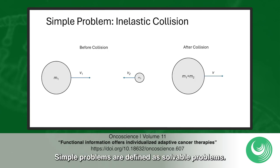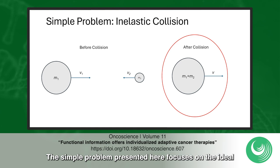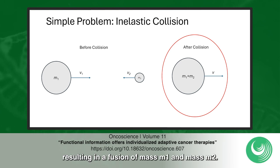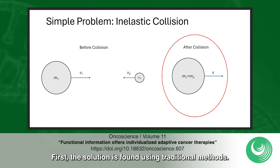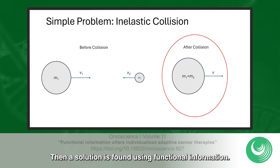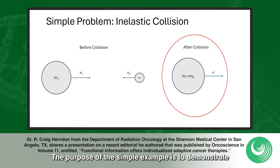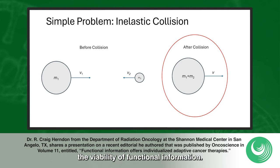Simple problems are defined as solvable problems. The simple problem presented here focuses on the ideal inelastic collision of two objects resulting in a fusion of mass m1 and mass m2. First, a solution is found using traditional methods. Then, a solution is found using functional information. The purpose of the simple example is to demonstrate the viability of functional information.